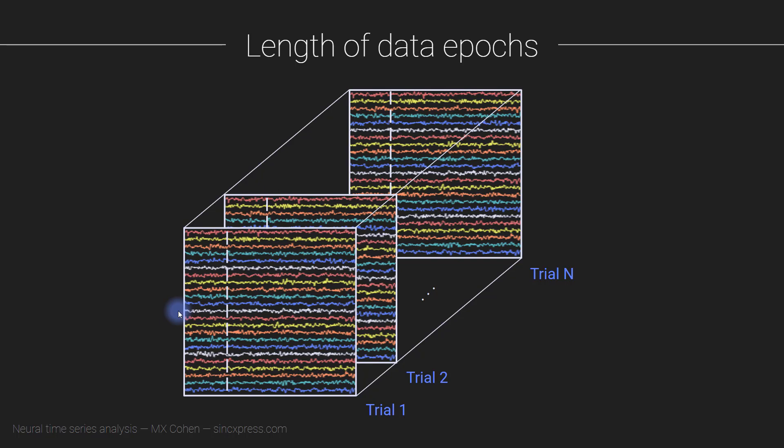And if you create these super trials by concatenating all the individual trials together into one really long trial—remember, that's one of the tricks I showed to speed up convolution—then there are going to be edges in the data between, you know, this time point and this time point, so the end of the data boundary at one trial and the beginning of the data boundary in the next trial.